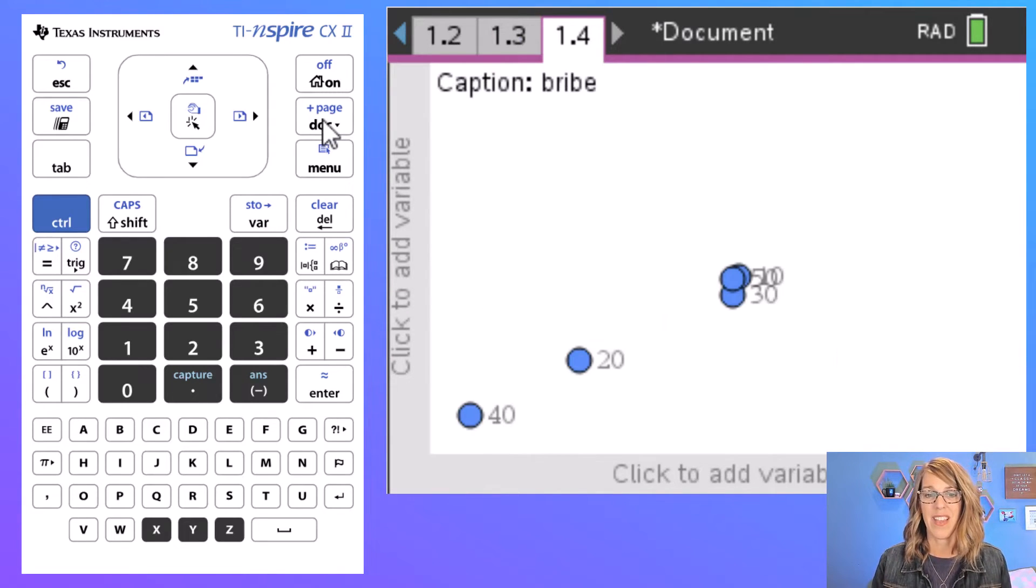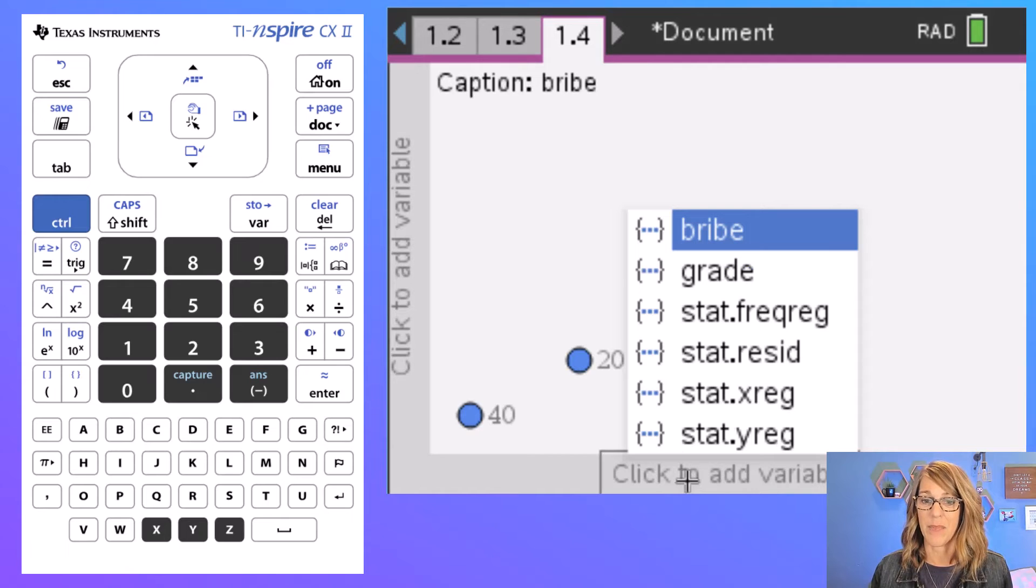And it just kind of guesses and doesn't do a great job. Instead I want the bribe, the explanatory variable, on that horizontal axis. Now you can get there using your navigation keypad. I'm on my computer so I'm just going to use my mouse to navigate over and then click to add that variable.